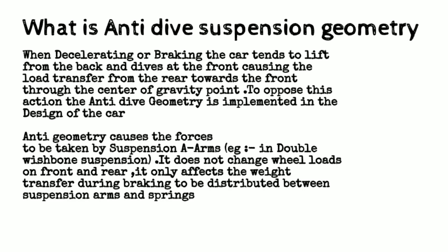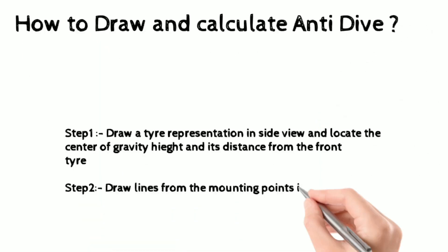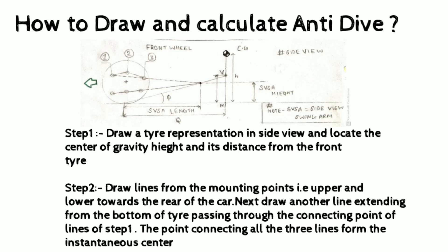The steps to draw and calculate anti-dive: First, draw a tire representation in the side view and locate the center of gravity height and its distance from the front tire. Second, draw lines extending from the mounting points of the upper and lower wishbones towards another line extending from the bottom of the tire contact patch, connecting all three lines to form an instantaneous center. The distance from the center of the front tire to the instantaneous center is called the SVSA length — the side view swing arm length.